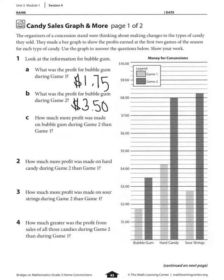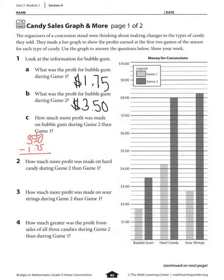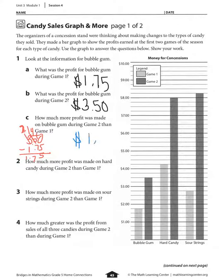Part C asks: how much more profit was made on bubble gum during game two than game one? We're finding the difference, so we subtract: three dollars and fifty cents minus a dollar seventy-five. You can solve it using subtraction strategies, or count up on the graph — that's seven quarters, and seven quarters equals a dollar seventy-five. So the difference is a dollar seventy-five.